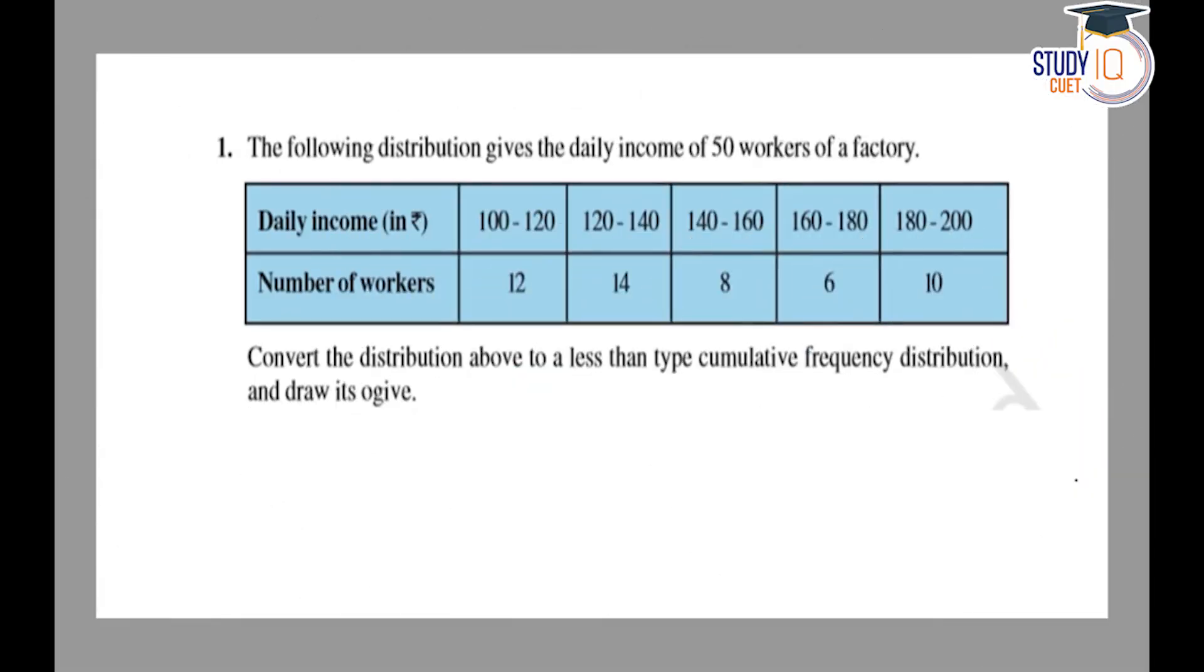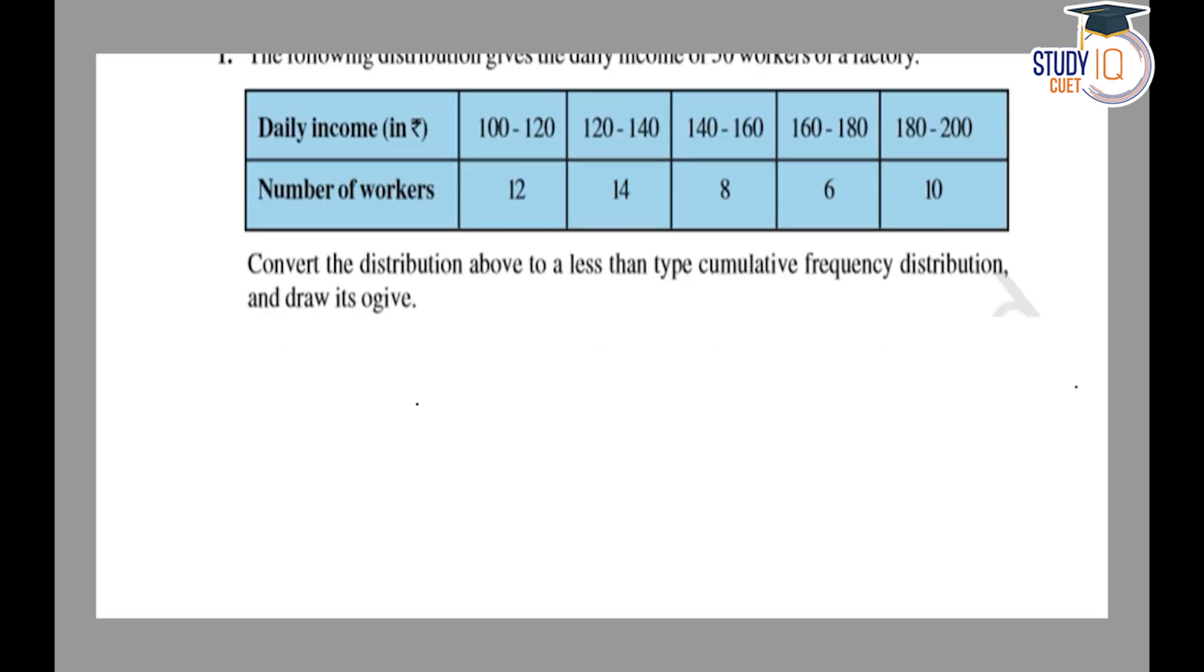CBSE class 10th NCERT exercise 14.4 question number 1. The following distribution gives the daily income of 50 workers of a factory. We have to draw the graph of cumulative frequency distribution for daily income less than type.